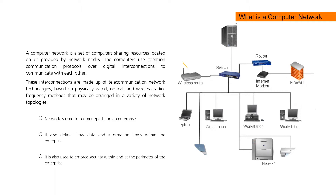Why do we have this kind of arrangement and connectivity? It's just for us to share resources online. Everything is categorized into either a wired network or a wireless network. Network is also used to segment or partition an enterprise — in the sense that we control where data or information flows to. We segment information that should be internal, external, or global, which is why we always have that composition of intranet, internet, and extranet in whatever diagram that we see.